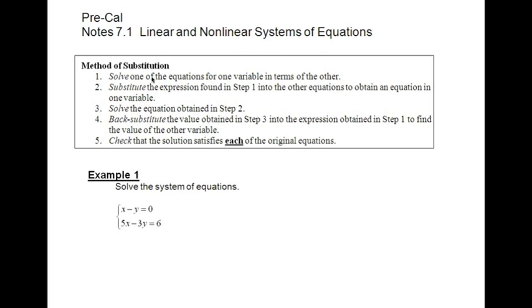Solve one of the equations for one of the variables in terms of the other. You have x minus y equals zero and 5x minus 3y equals 6. I'm going to take that first equation because it looks the easiest. x minus y equals 0. Solve it for x. So x equals y. Step one, done.